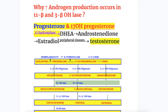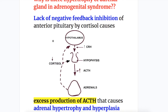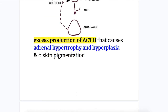Why is there increased androgen production in 11 beta and 3 beta hydroxylase deficiency? When these enzymes are deficient, there is a backup of substrate that causes an increase in DHEA and androgens, along with a deficiency of aldosterone and cortisol. Lack of negative cortisol inhibition causes increased ACTH, which leads to adrenal hyperplasia and hypertrophy with increased skin pigmentation.